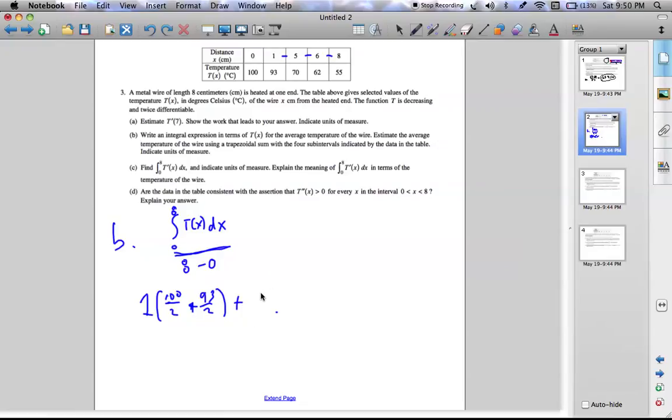1 to 5 is 4 of 93 divided by 2 plus 70 divided by 2 plus 1 times 70 divided by 2 plus 62 divided by 2 plus 2 times 62 plus 55 divided by 2 times 62 plus 55 divided by 2. We do that for everyone, but anyway.